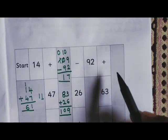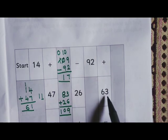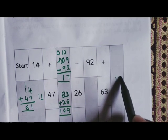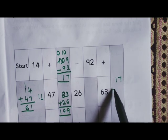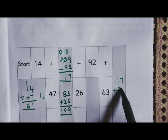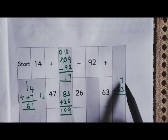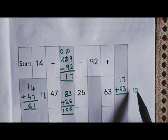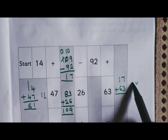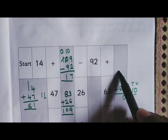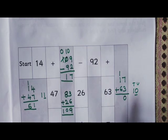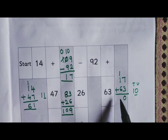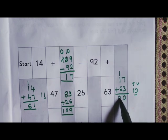Then 17 plus 63. 7 plus 3 is 10. 0 you write. And 1 carry to the 10th place. 1 plus 1 is 2. 2 plus 6 is 8. 80.